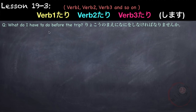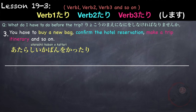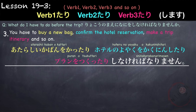Another example: what do I have to do before the trip? Ryokou no mae ni nani o shinakereba narimasen ka? For example, you have to buy a new bag, confirm the hotel reservation, make a trip itinerary, and so on. Atarashii kaban wo kattari, hoteru no yoyaku wo kakunin shitari, puran wo tsukuttari, shinakereba narimasen.